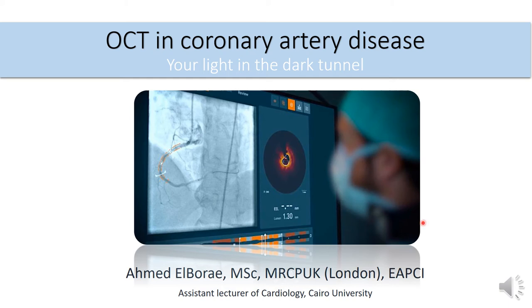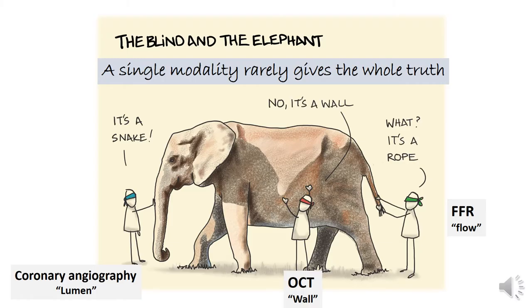Hello everyone. Our talk today will start with the famous story of the blind people trying to describe an elephant. This is actually the real situation in the cath lab. Everyone tells you this lesion is significant, this lesion looks hazy, but this comes from luminography only — from coronary angiography. We can't comment on the wall like OCT, or on the physiological significance like FFR or IFR. So a single modality rarely gives the whole truth.